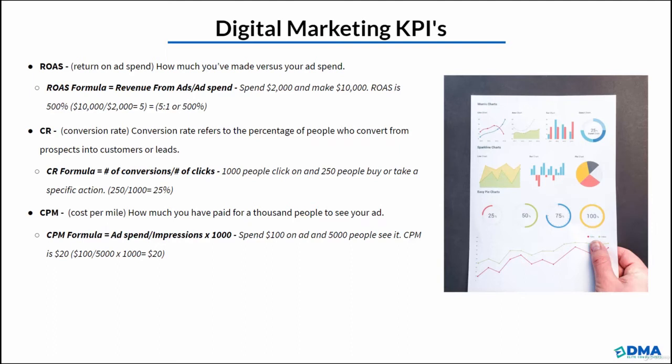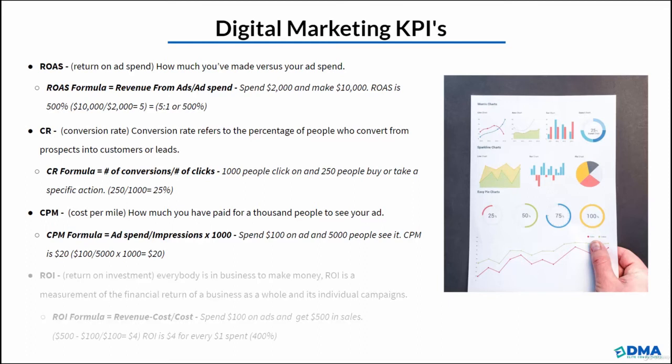We also have CPM, cost per mille. This essentially means how much you've paid for a thousand people to see your ad. The formula is ad spend divided by impressions, times 1,000. For example, if we spend $100 on an ad and 5,000 people see it, our CPM is $20 — meaning we spent $20 for every 1,000 people that saw our ad.